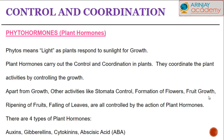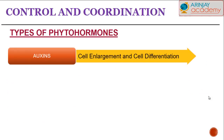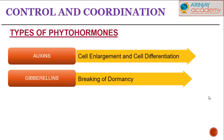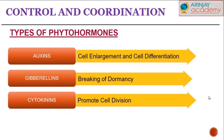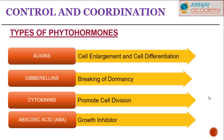There are basically four types of plant hormones, or phytohormones. You have the auxins, the gibberellins, the cytokinins, and the abscisic acid. The auxins help in cell enlargement and cell differentiation. The gibberellins help in the breaking of dormancy when a seed is asleep. The cytokinins help in promoting cell division when the plant is growing. And the abscisic acid, or ABA, is basically the growth inhibitor — which, when the plant is in its growing stage, helps regulate its growth.